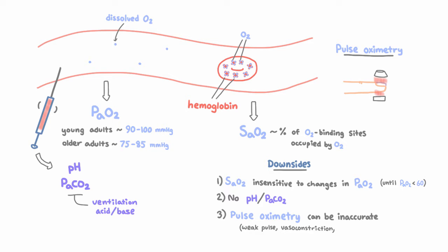There can also be interference by venous pulsations, which can happen in severe heart failure or arrhythmias. And finally, you can get an inaccurate reading if atypical hemoglobin is present.